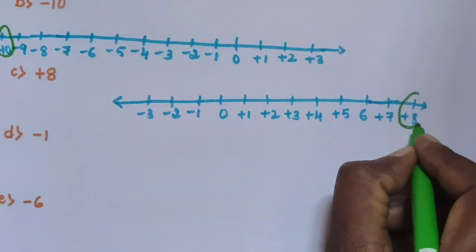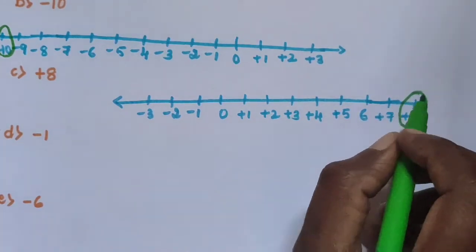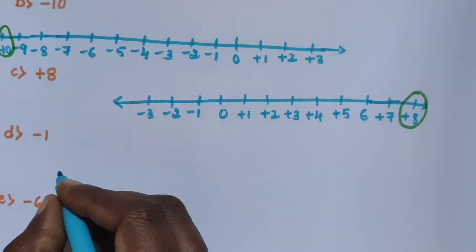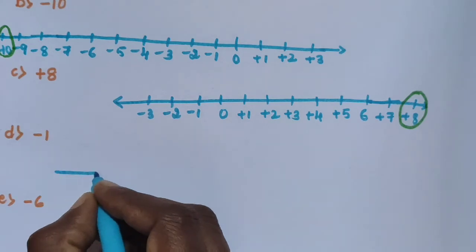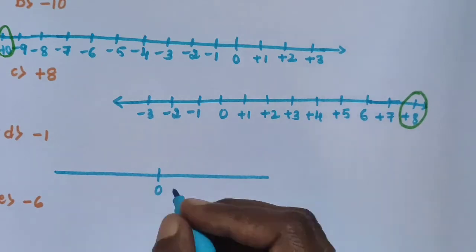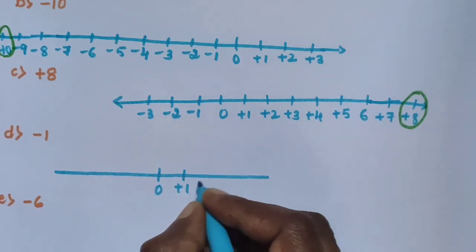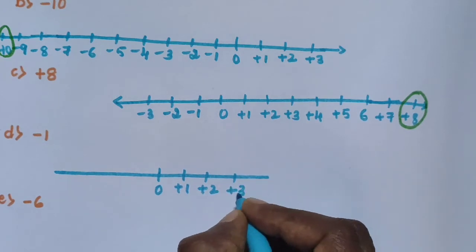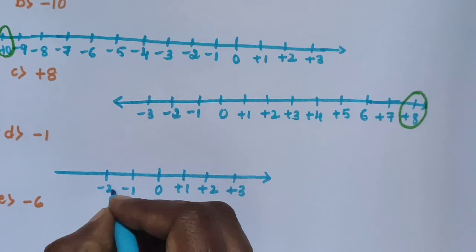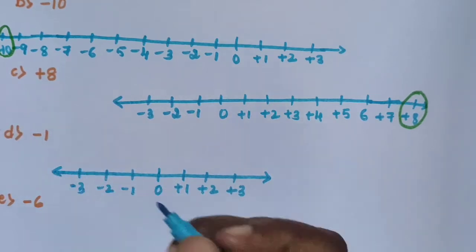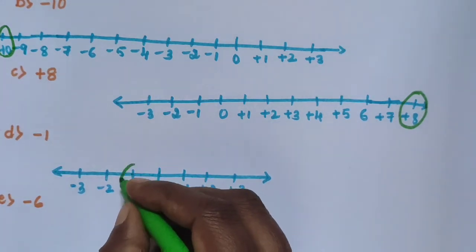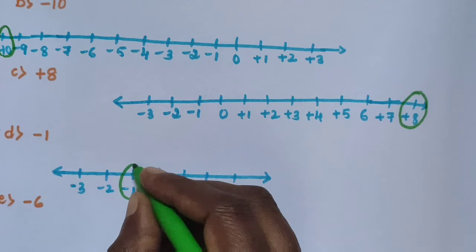Mark for plus 8 on the number line. Sub-question D: Draw the number line with 0 in the center, plus 1, plus 2, plus 3 and so on to the right, minus 1, minus 2, minus 3 and so on to the left. Represent minus 1 — this is minus 1.